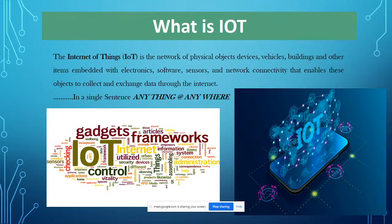The controller controls any appliance — a light, a robot, or any automation — depending on your application. These are the basic structures to build IoT. Every data is transmitted and received through IoT.